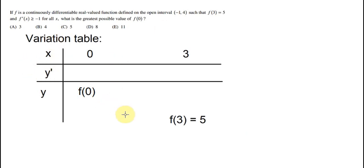Based on the variation table, you can see that from 0 to 3, the value of f(0) should be the highest point.